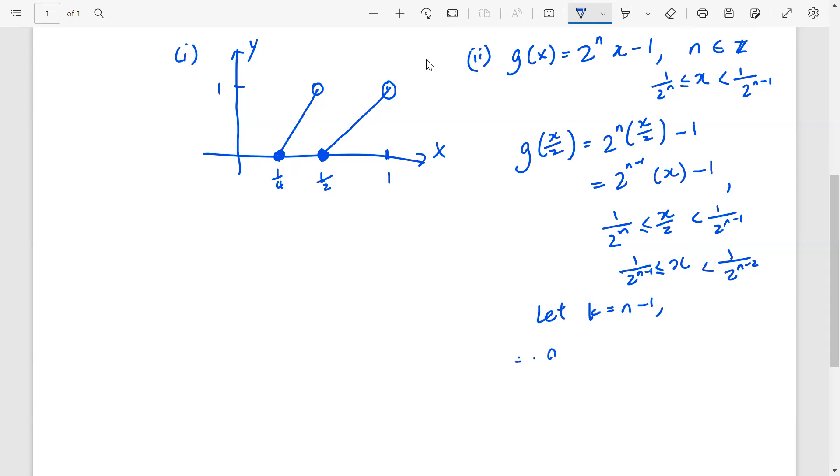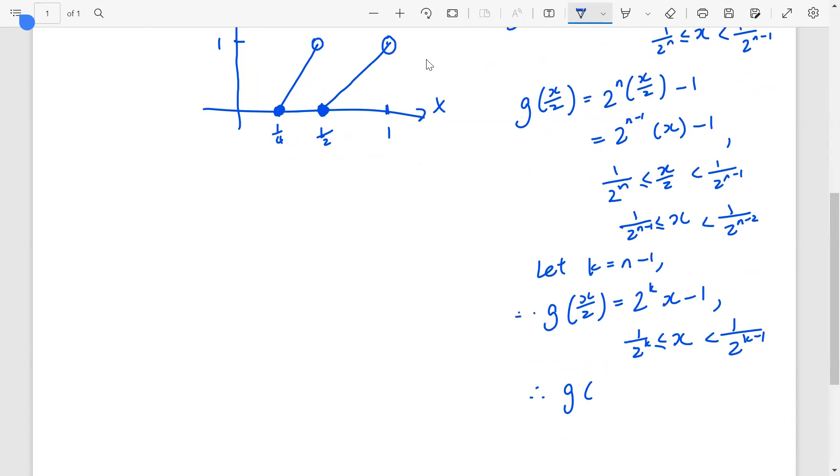Therefore, g(x/2) equals 2 power k x minus 1 where x is between 1 over 2 to the power of k and 1 over 2 to the power of k minus 1. Therefore, for all values of k, I should have written here, not enough space, but never mind. So, for all, k is all integers as well.